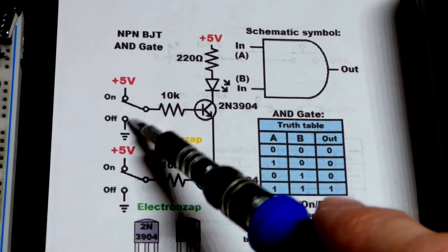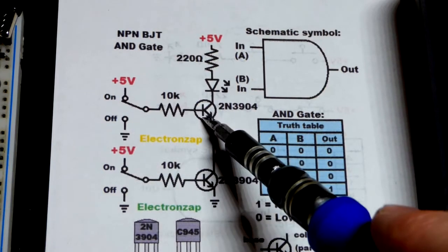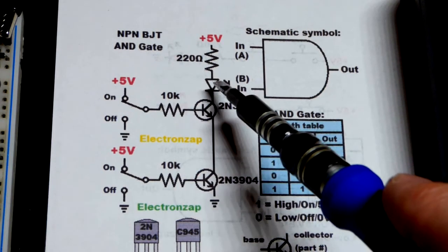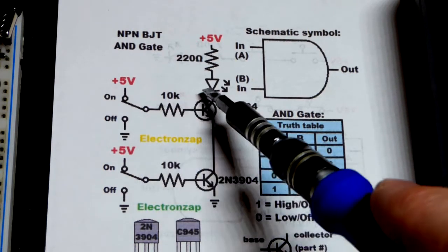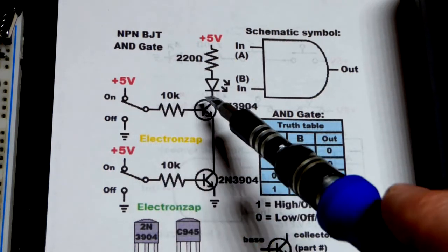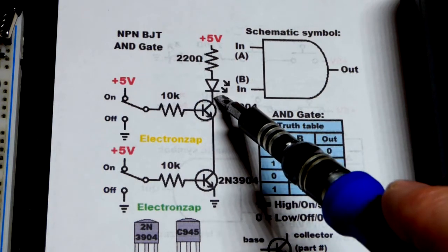When it's to the negative supply, because of the way NPN bipolar junction transistors are, there will be no current from collector to emitter. Current won't flow that way and so it'll be off completely.